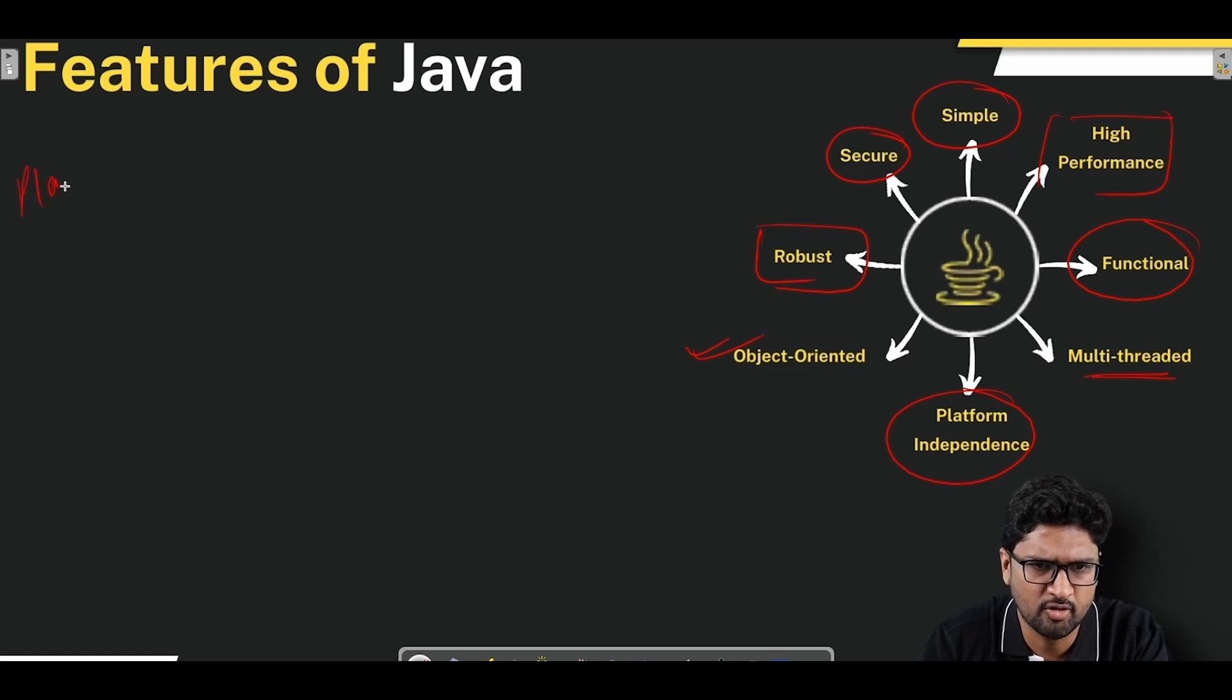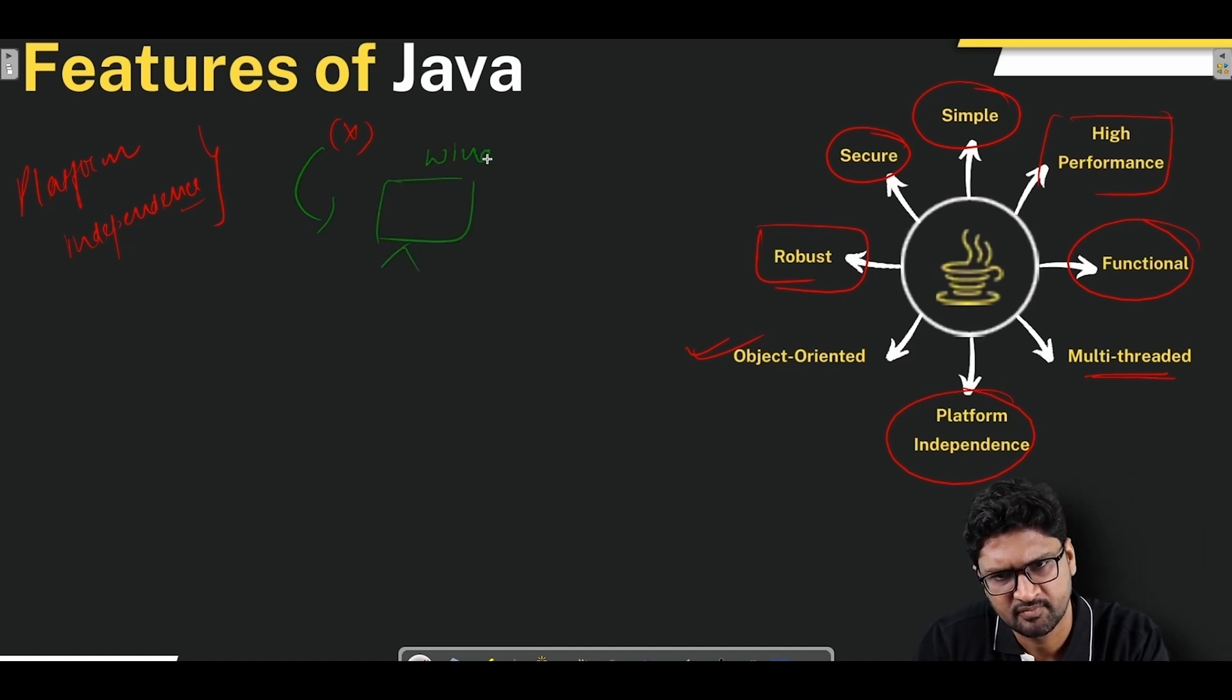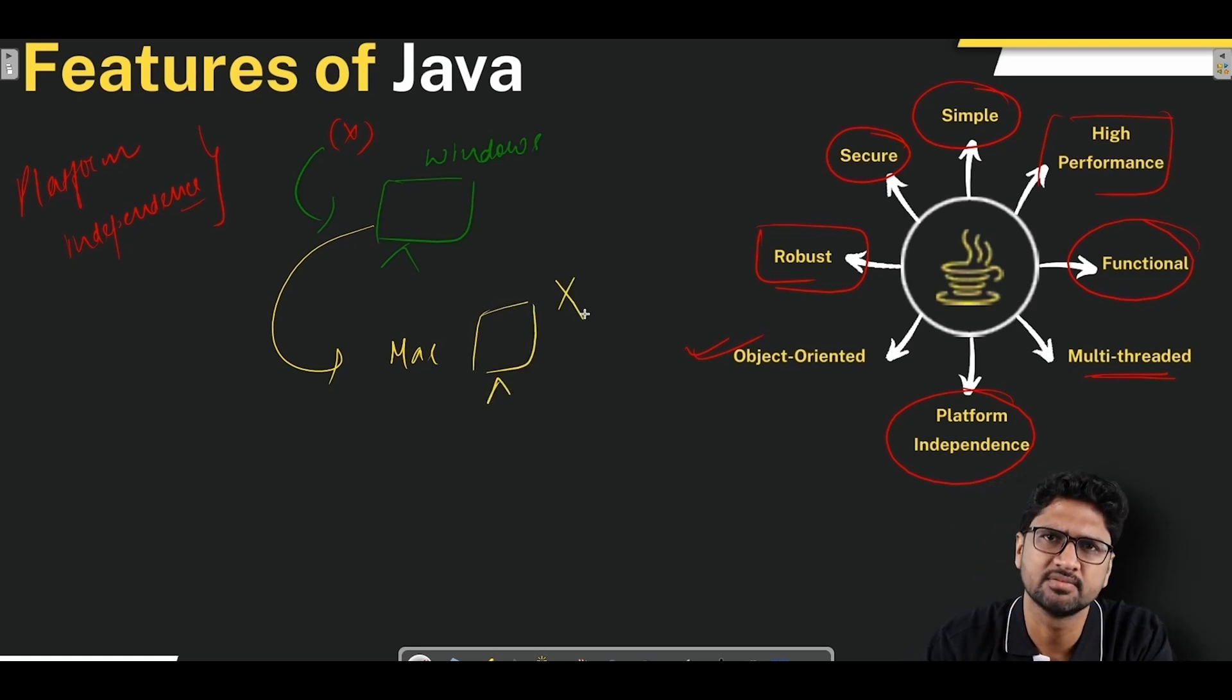Let's try to understand what platform independence means. If there is a programming language called X and you've used this programming language to write code on a Windows machine, and now if I want to take this same code to another machine, say for example Mac, and if it is not running, that's a big problem.